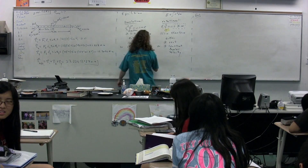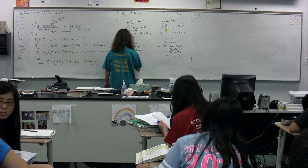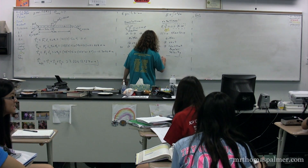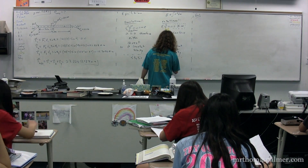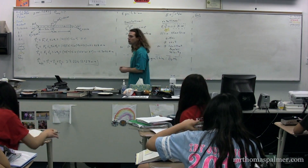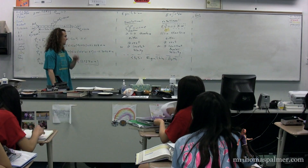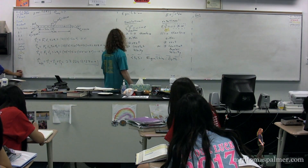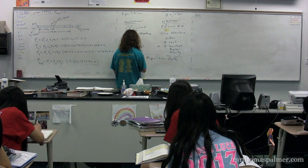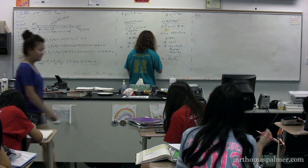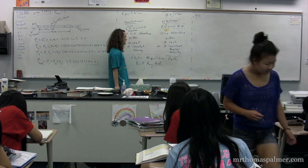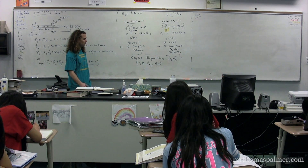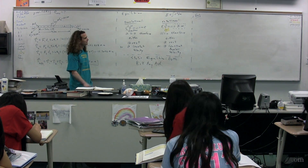There is one other type of equilibrium: static equilibrium. All that means is if you are in static equilibrium, you are in both translational and rotational equilibrium. When something is in static equilibrium, you can pick any axis of rotation, because the object isn't actually rotating in any direction.